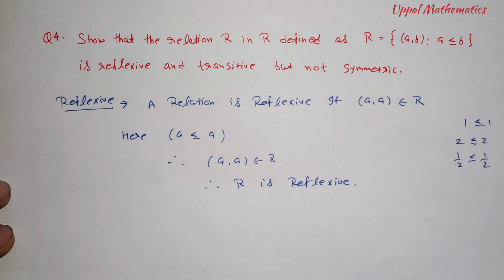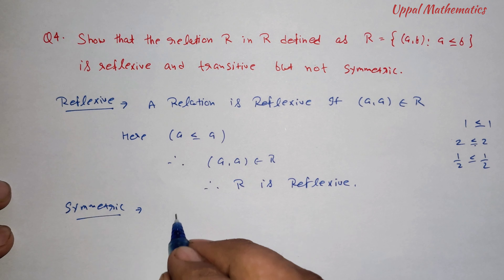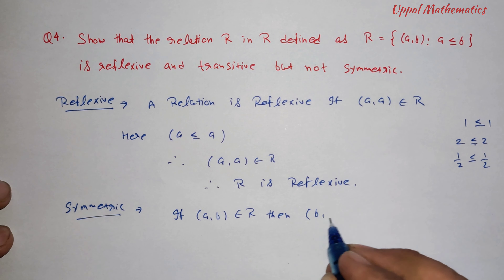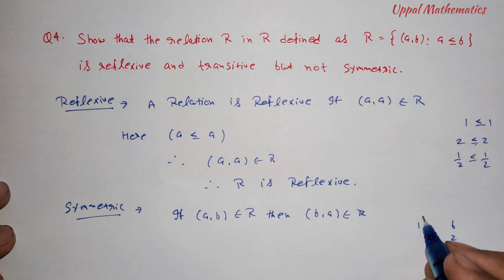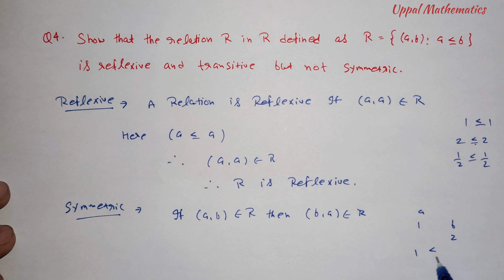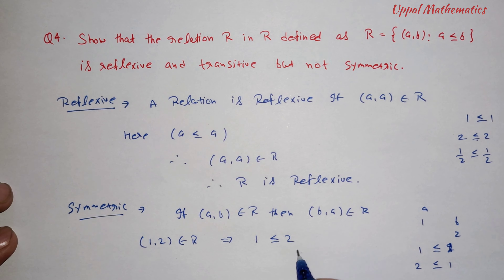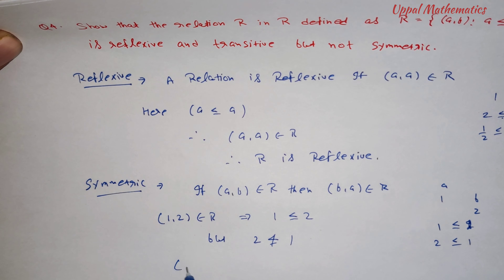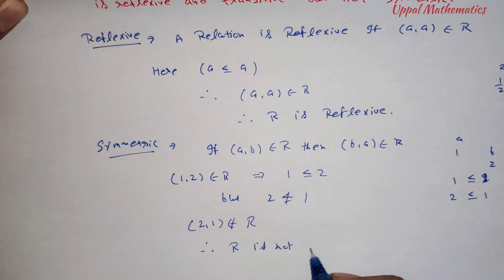Second, we check symmetric. A relation is symmetric if (A, B) belongs to R implies (B, A) belongs to R. Take A = 1, B = 2: (1, 2) belongs to R because 1 ≤ 2. But 2 is not less than or equal to 1, so (2, 1) does not belong to R. Therefore R is not symmetric.